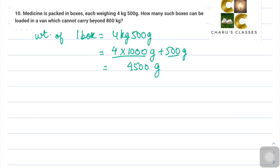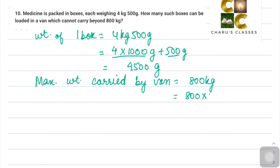Now the van cannot carry beyond 800 kg, so maximum weight carried by van is 800 kg. And 1 kg is 1000 grams, so 800 into 1000 grams, that is 800,000 grams.